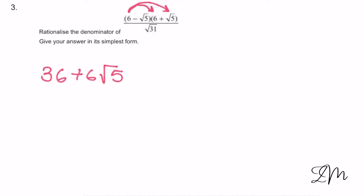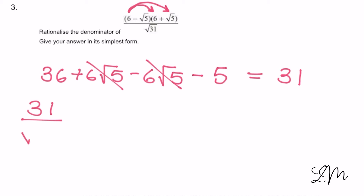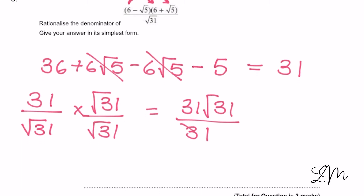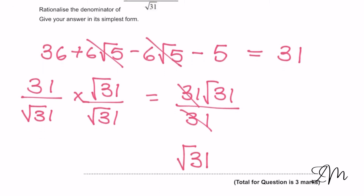We've got minus 6√5, and then minus √5 times √5 which is 5. Now you may have noticed straight away that was in the difference of two squares form, so you could have gone straight to 36 minus 5, which is 31. These two cancel, so now we've got 31 over √31. We're going to times top and bottom by √31, which gives us 31√31 over 31 — leaving us with just √31.